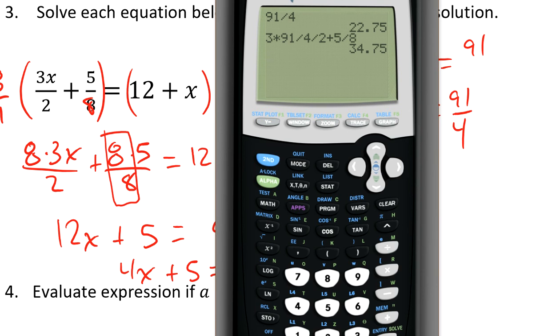Well, the question is, do I get the same thing if I take 91 fourths and add 12? Because that's what the other side says. It's 12 plus the x. So if I enter 12 plus 91 over 4, you can see that both of them are exactly 34.75.